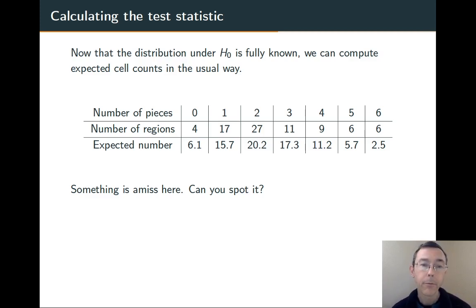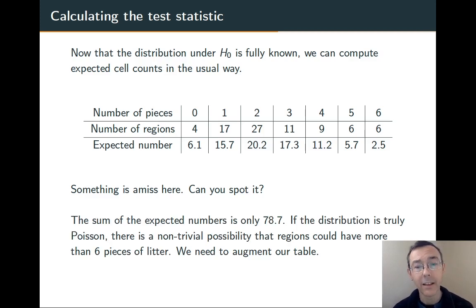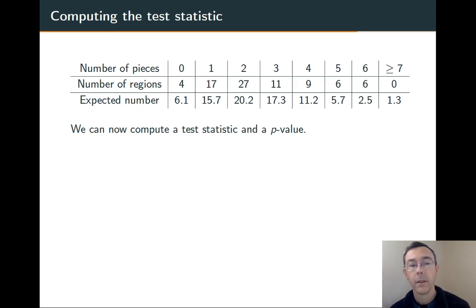There's a problem here. If you want to look for it, pause the video here. So the problem is that these expected numbers don't add up to 80. There's a non-trivial probability that a region could have more than six pieces of litter. So we ought to augment our table. There we go.